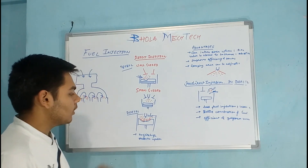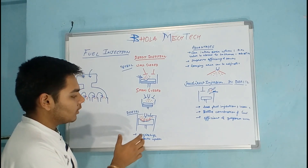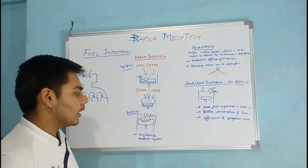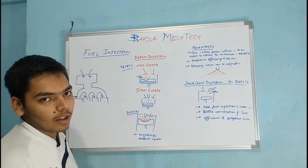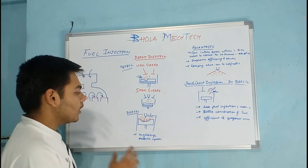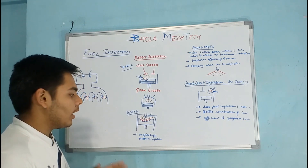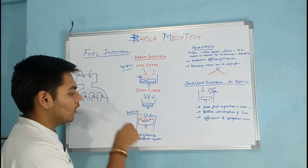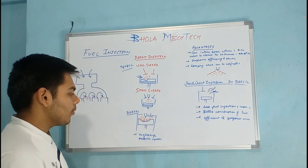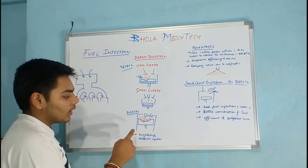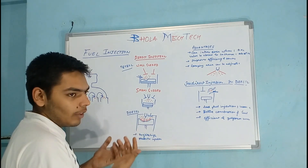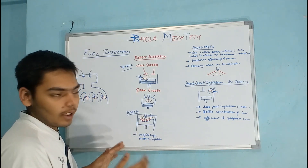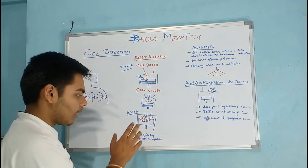In diesel engines, the fuel injector is placed such that the fuel is injected at the last moment when the air is completely compressed. At that moment it requires a very high pressure fuel injection system. When the fuel is supplied into the cylinder, it is spread into the cylinder to mix with the compressed air.